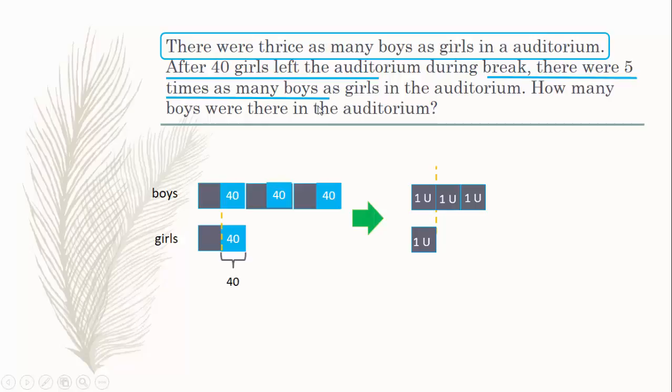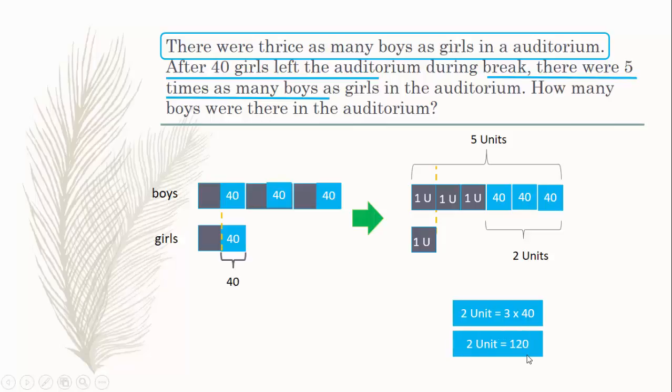We know that there were five times as many boys as girls. So boys should have five units of this size and girls one unit. Totally you should have five units. I've got three units here. The rest is made up of this 40, this 40 and this 40. So 40 plus 40 plus 40 should be constituting two units. The remaining two units will come from here. So 40 times 3 is 120, two units is equal to 120, so one unit should be equal to 60.